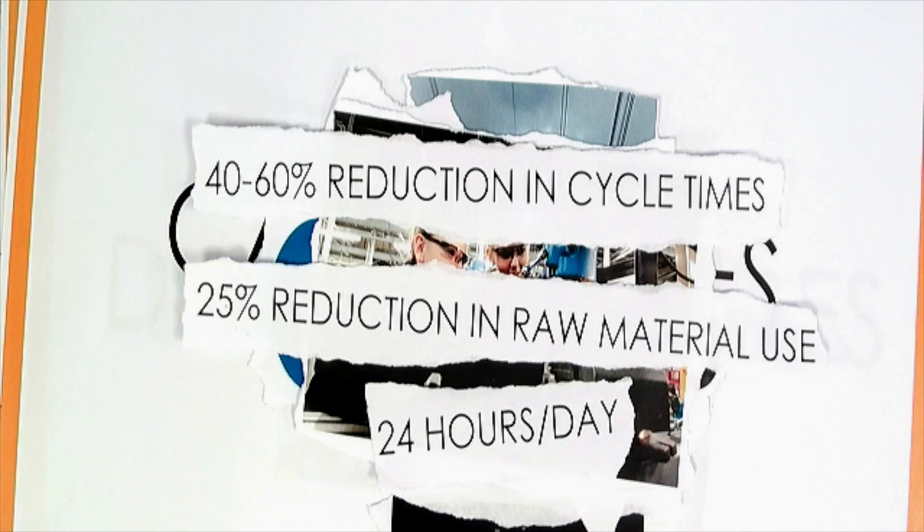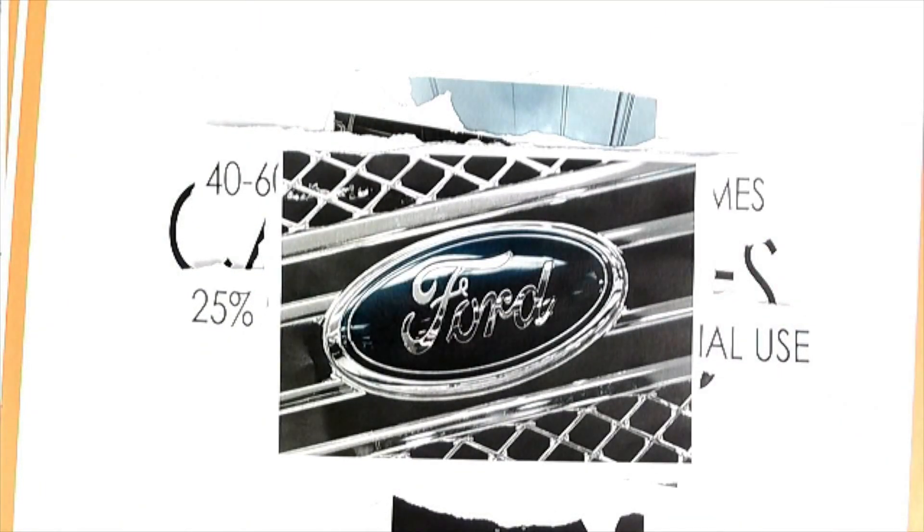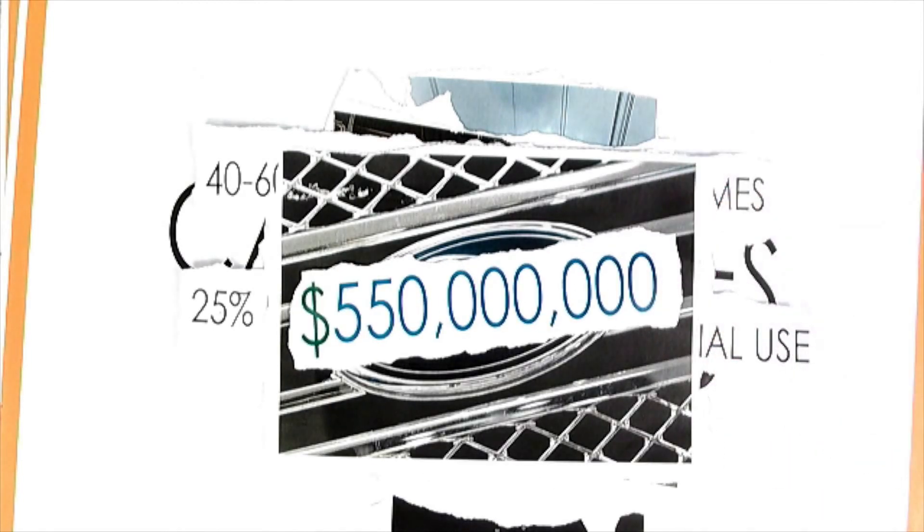Ford also took advantage of a flexible manufacturing system as they wanted to build multiple models in one plant. They invested US$550 million into overhauling the Michigan assembly plant focusing on flexible tooling.